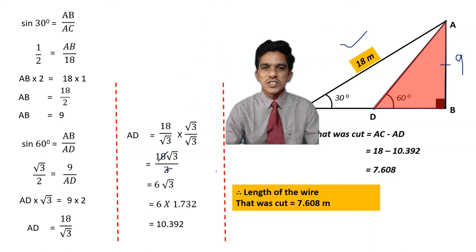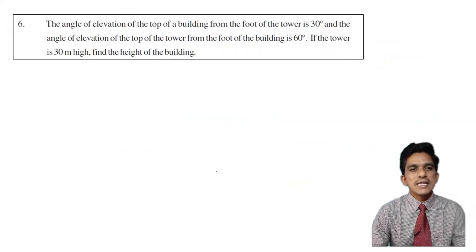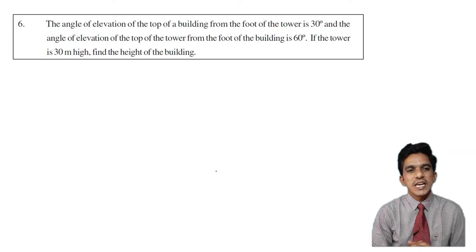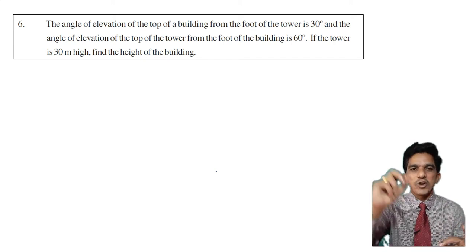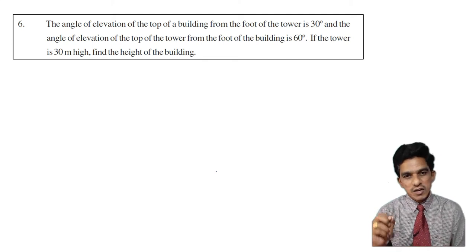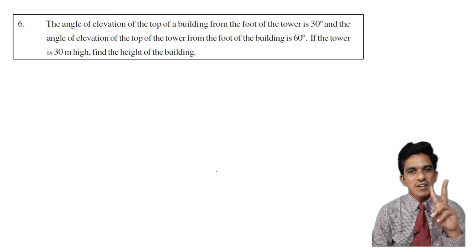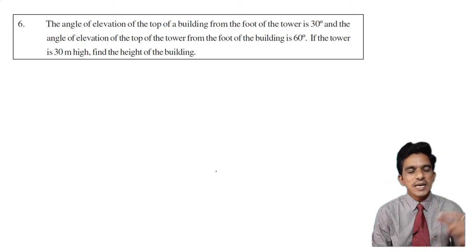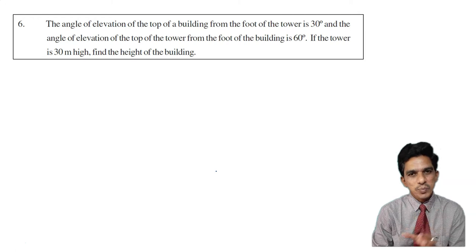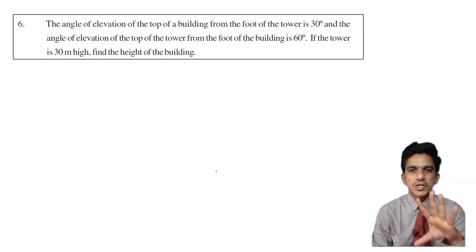The length of wire that was cut is 18 − 10.392 = 7.608 meters. Therefore, the length of the wire that was cut is 7.608 meters. Now let us look at problem number 6. The angle of elevation of the top of a building from the foot of the tower is 30 degrees, and the angle of elevation of the top of the tower from the foot of the building is 60 degrees. The tower is taller than the building since its angle of elevation is larger.